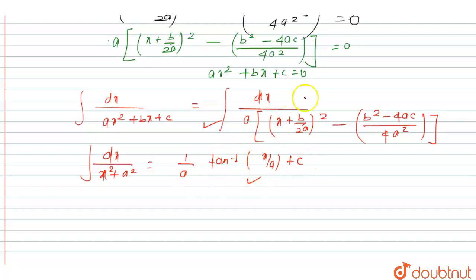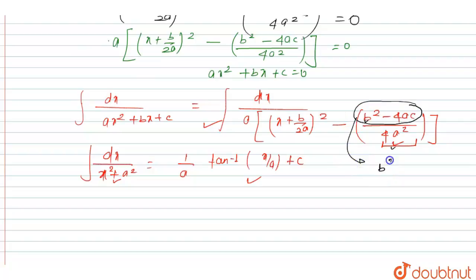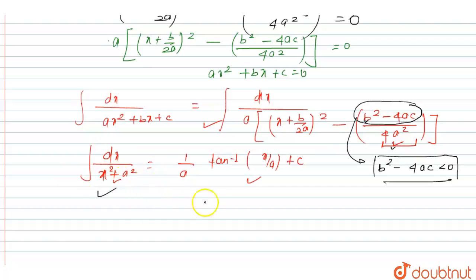This value matches the given format. This format is possible when the expression is positive, and 4a² is a positive quantity. Since 4a² and b² are both positive quantities, we can say that b² - 4ac must be less than 0. So the first conclusion is b² - 4ac less than 0.